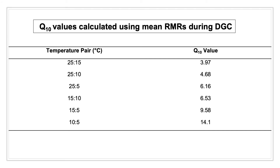Here we can see that Q10 values are much higher than the normal 2 to 3 range, suggesting that measuring VCO2 using DGCs may have provided a more accurate depiction of RMR.